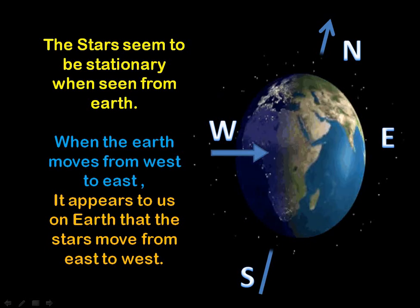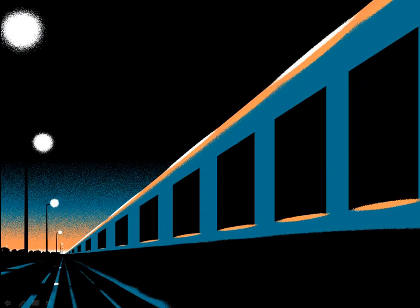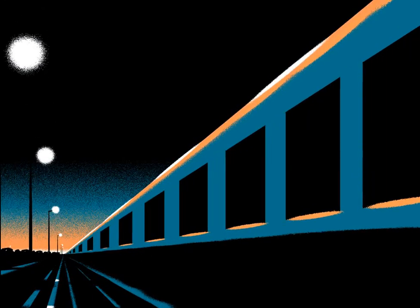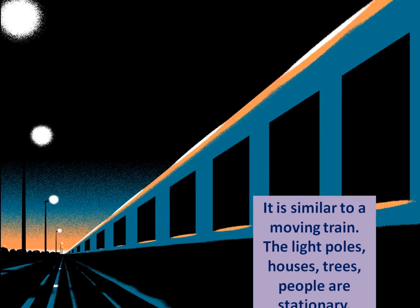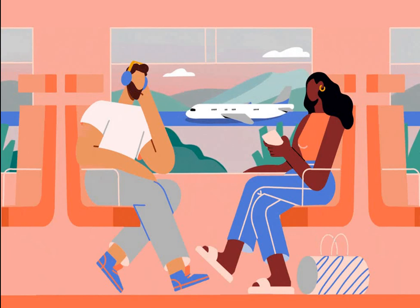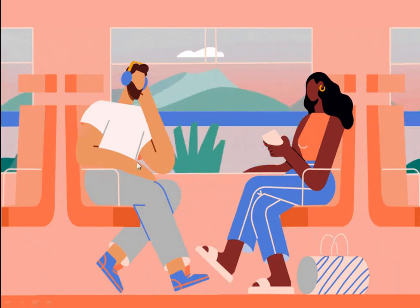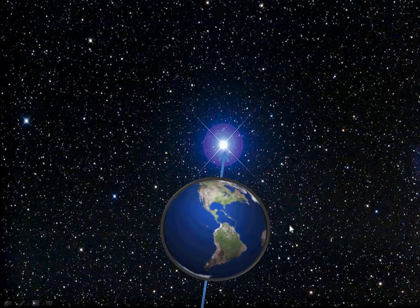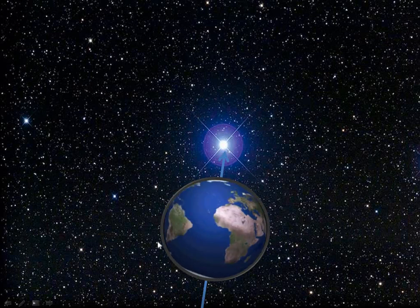Let me show you an example. You can see a train moving on one side, and lights appearing to move on the other side. When the train moves, are the lights actually moving? No — the lamp posts are stationary while the train is moving. When we sit in the train and compare, we see the lights, people, and buildings moving backwards while the train moves forwards. Similarly, the Earth moves from west to east, and it appears to us that the stars are moving from east to west.